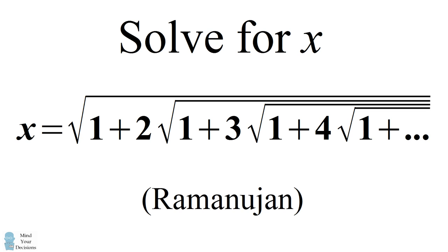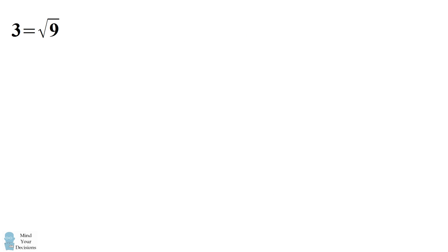3 is equal to the square root of 9. 9 equals 1 plus 8, and 8 factors out into 2 times 4. 4 can be expressed as the square root of 16. We now have a square root inside of another square root. We've come to the first iteration of this nested radical.